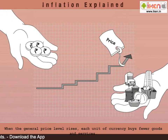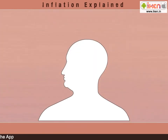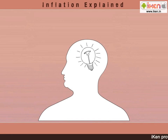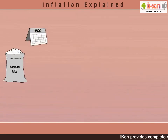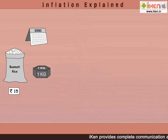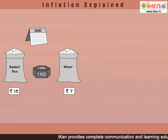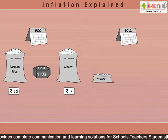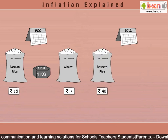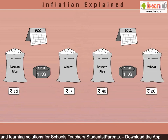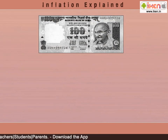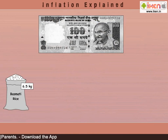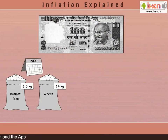Let us understand this with actual facts and figures. In the year 2000, basmati rice was costing 15 rupees a kilogram and wheat was costing 7 rupees for the same quantity. In the year 2012, the cost of rice is approximately 40 rupees a kilo whereas wheat costs 20 rupees for the same quantity. This means a hundred rupee note could buy more than six and a half kilos of rice or 14 kilos of wheat in the year 2000.